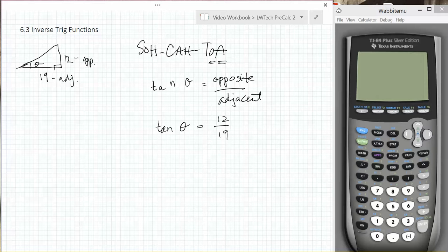I need to find what angle has a tangent of 12 over 19. We can use the inverse tangent to undo the tangent function to solve for our unknown angle.